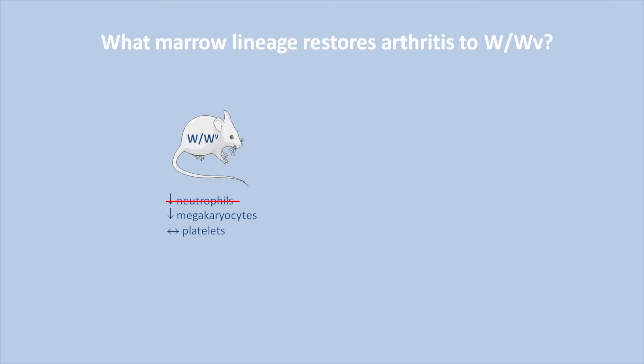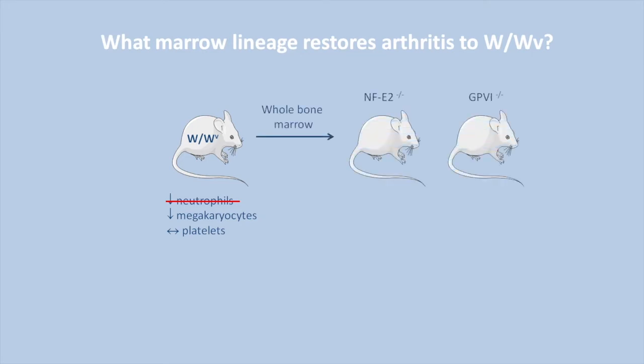Interestingly, WWV mice are also relatively deficient in megakaryocytes because of the role of KIT in MK development, although circulating platelet numbers remain normal because residual MKs are larger. To test the role of platelets and MKs, we engrafted marrow deficient in the lineage-specific determinants NFE-2 and GP-6, and confirmed that neither could restore arthritis. Thus, the missing marrow cells belong to the platelet megakaryocyte lineage.